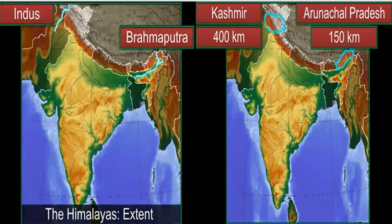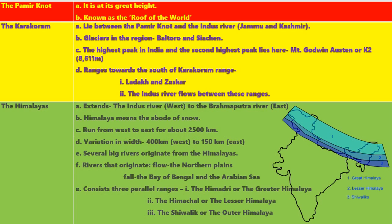The Himalayas consist of three ranges that are parallel to each other, running from north to south. These three ranges are: the Himadri, known as the Great Himalaya; the Himachal, known as the Lesser Himalaya; and the Shivalik, known as the Outer Himalaya.